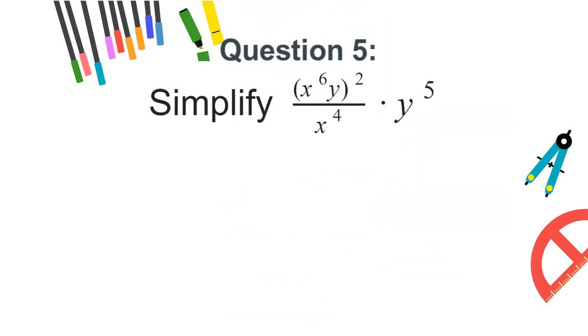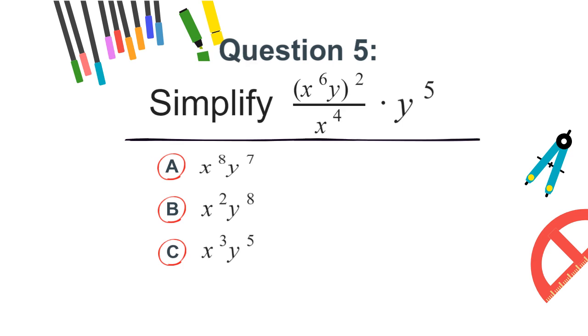Question 5. Simplify x to the 6th power times y squared divided by x to the 4th power times y to the 5th power. a. x to the 8th power times y to the 7th power. b. x squared times y to the 8th power. c. x cubed times y to the 5th power. or d. x squared times y to the 8th power.